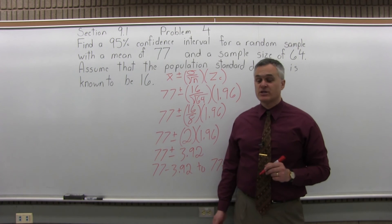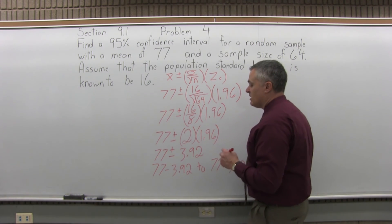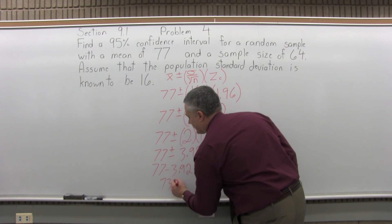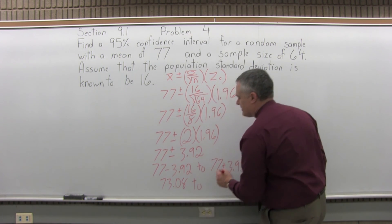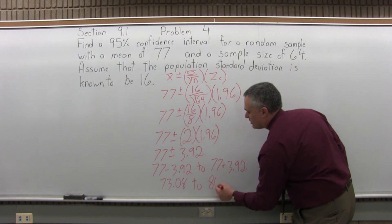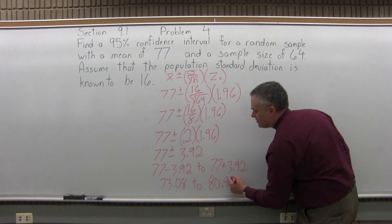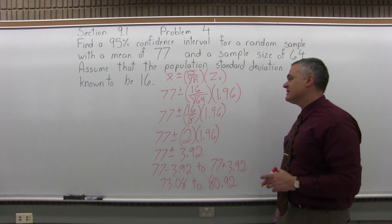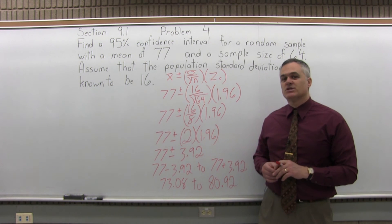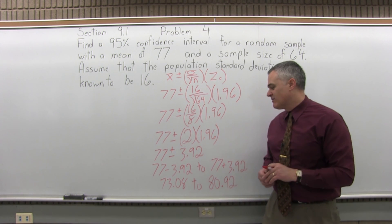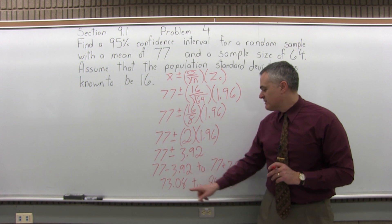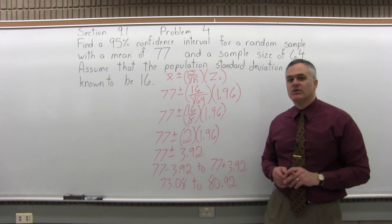So now you can actually do that subtraction. 77 minus 3.92 would be 73.08. And the upper end of the interval, 77 plus 3.92, would be 80.92. So you're basically 95% sure that if you could examine the entire population and find the true population average, you'd have a 95% chance that it would be somewhere in the interval between 73.08 and 80.92.